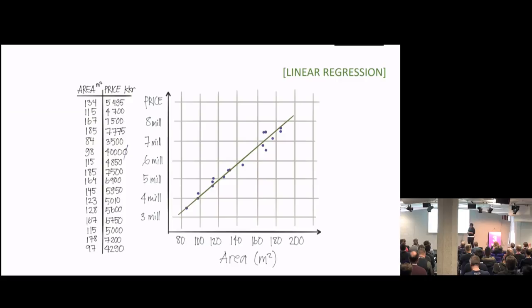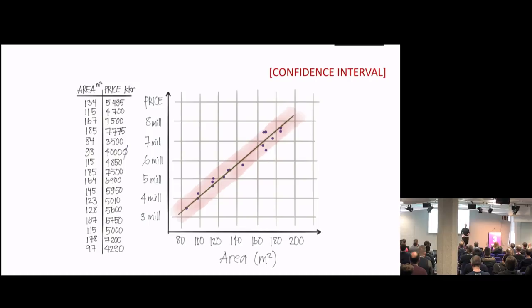We can use a marker around all the dots, because not all the dots are on that straight line. This tells us how far off we are at maximum — give or take maybe 50,000 pounds off, which can seem excessive. But we can fix that by giving more parameters, because obviously area is not the only factor in how much a house costs. We can also fix it by having a better model that fits the data a little bit better.